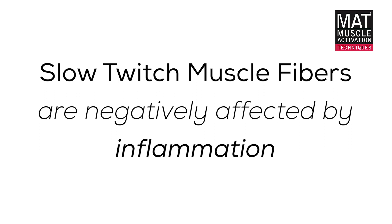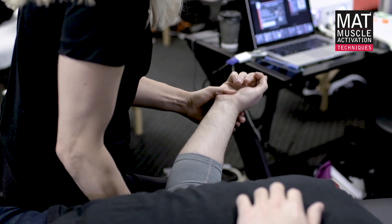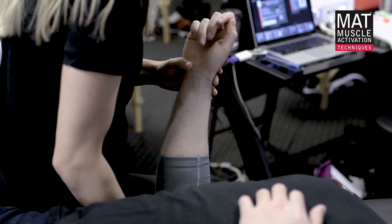These slow twitch muscle fibers begin to pick up fast twitch characteristics. There are metabolic changes that occur in the muscles themselves where they fatigue at a higher rate, and the main factor is that they lose their oxidative capacity, which is a component of the increased fatigue rate.